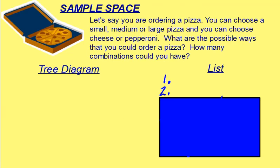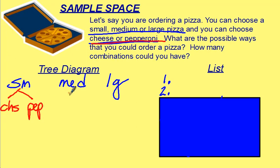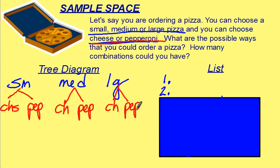Let's say you were ordering a pizza. You can choose a small, medium, or large pizza, and you can choose to use pepperoni or cheese. What are all the possible ways you could order your pizza? How many combinations could you have? The first thing you have to choose is the size — small, medium, or large. Then you would need to decide what toppings: cheese or pepperoni.